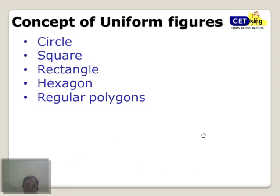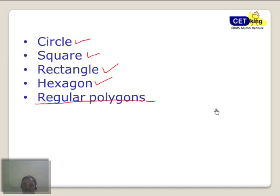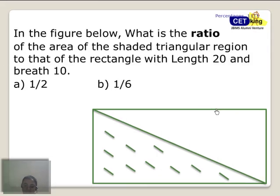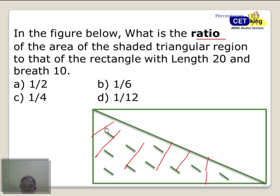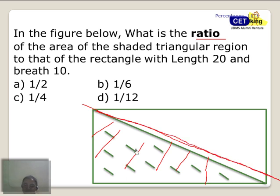The concept of a uniform figure covers anything — it can be a circle, a square, a rectangle, a hexagon, or any regular polygon. This rule is valid across the board — we are essentially cutting everything into equal parts. Next example: find the ratio of the area of the shaded portion to the non-shaded portion, and the shaded region to the total rectangle. Can we say this area is nothing but half of everything? All we have to do is draw the line that makes equal parts — 50% is one area and 50% is the other, so the ratio becomes one-half.